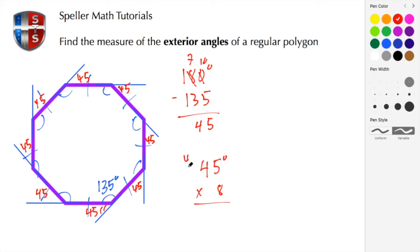Here we have 45 degrees for each one of these angles and we know that we have eight of them. So we're going to multiply: 8 times 5 to give me 40, 8 times 4 to give me 32, plus that 4 to give me 36. So here we see the 360 degrees for the exterior angles.